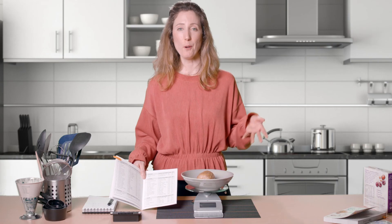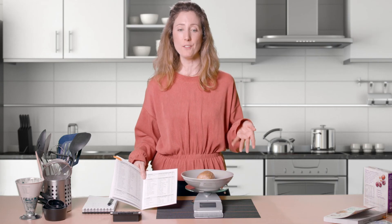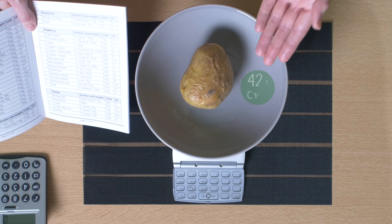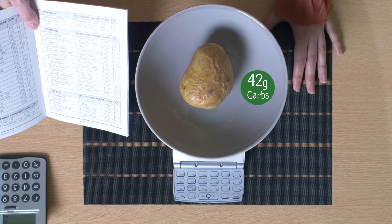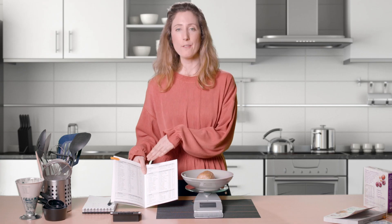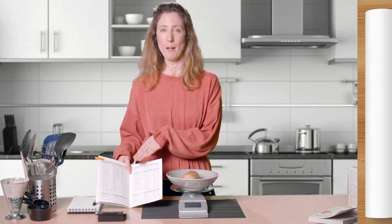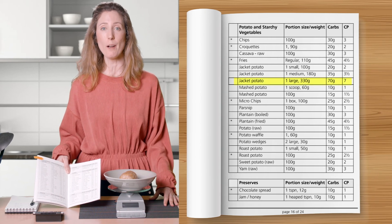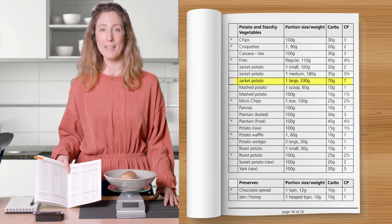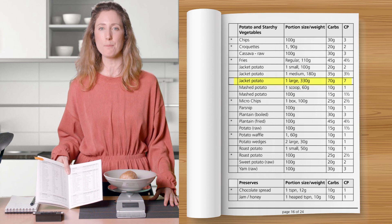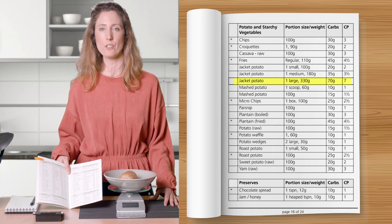So from the calculation the carbohydrate in my potato is 42 grams. But when I read the information in the carbohydrate portion list my estimate was 70 grams of carbohydrate. Weighing and calculating the carbohydrate is more accurate.